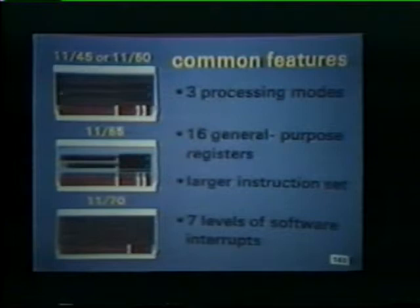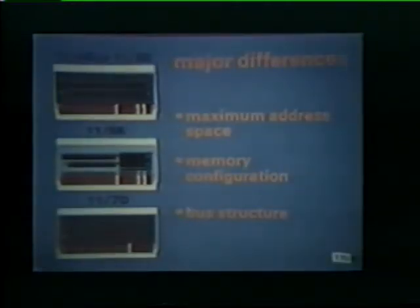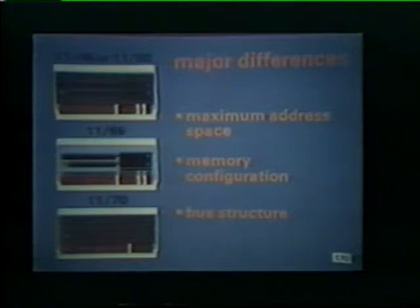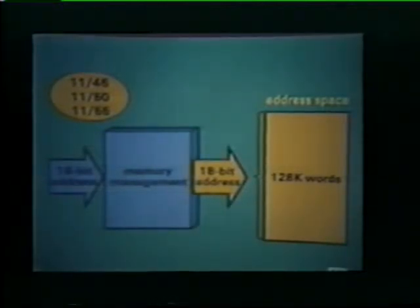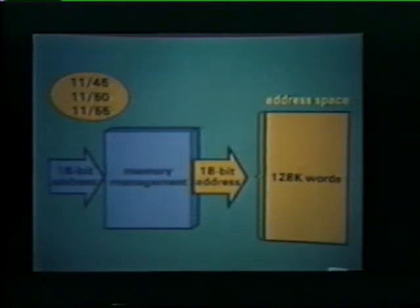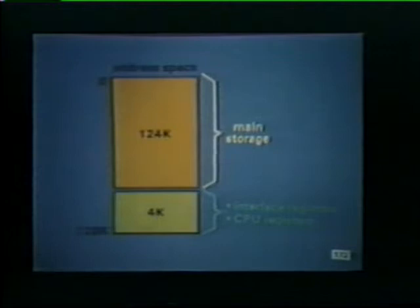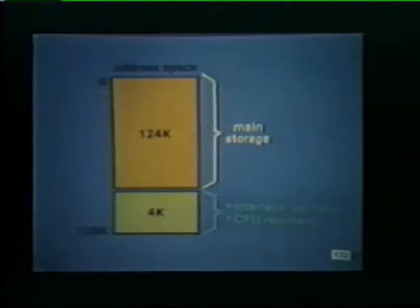We've listed and described those features common to all 1145s, 1150s, 1155s, and 1170s. Now let's look at the major differences between these medium scale computer systems. Our discussion will cover three areas: the maximum address space, the memory configuration, and the bus structure. In 1145, 1150, and 1155 systems, the memory management unit converts 16-bit addresses to 18 bits. With this expanded 18-bit address, the computer's maximum address space is increased to 128K words. The top 4K of the address space is reserved for registers contained in the IO interfaces and the CPU. The remaining addresses may be used to reference word or byte locations in main storage. Consequently, an 1145, 1150, or 1155 system can accommodate up to 124K words of main memory.